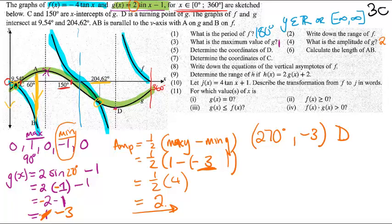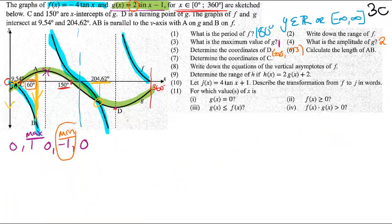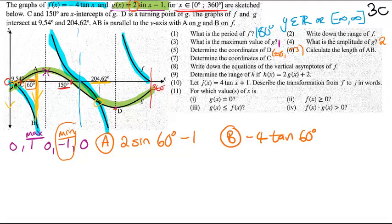Question number 6, calculate the length of AB. So how we do this is, what you need to notice is that they said that this AB cuts the y-axis at 60 degrees. So that's going to be significant to how we calculate this. So what we can do is, when you look at the line AB, you should know that the value of x, which is 60 degrees, is the same everywhere on that line. What is different is the y value. So first you're going to solve for A, which is your green one, which is 2 sine of 60 degrees minus 1. And then you're going to solve for B, which is your blue line, which is negative 4 tan of 60 degrees. Now, you can go ahead and use your calculator for this.